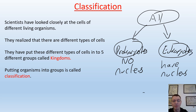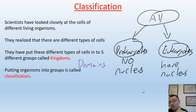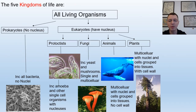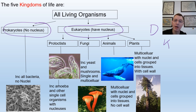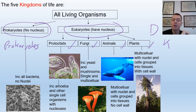This first division into prokaryotes and eukaryotes is known as the domains. Each domain can then be broken down into smaller groups called kingdoms. The eukaryotic domain contains four kingdoms: plants, animals, fungi, and protoctists. The prokaryotic domain has one kingdom - the prokaryotic kingdom. That gives a total of five kingdoms. We will now look at each kingdom in turn to see what characteristics an organism must have to be classified into it.